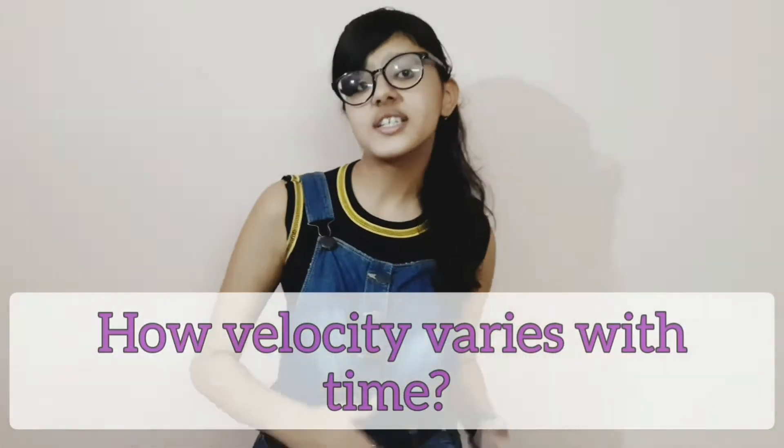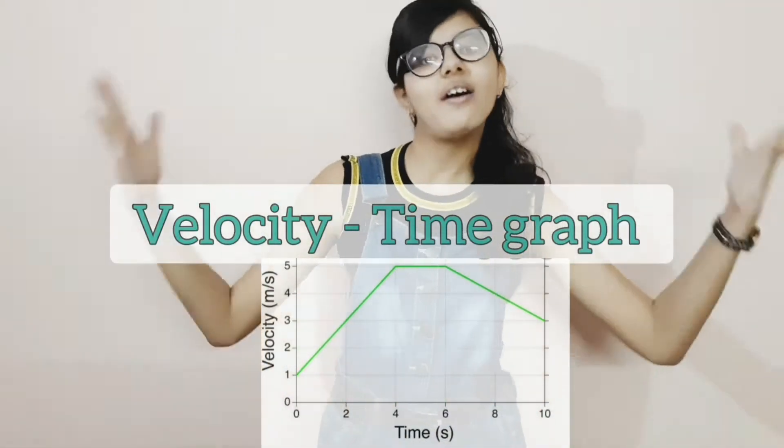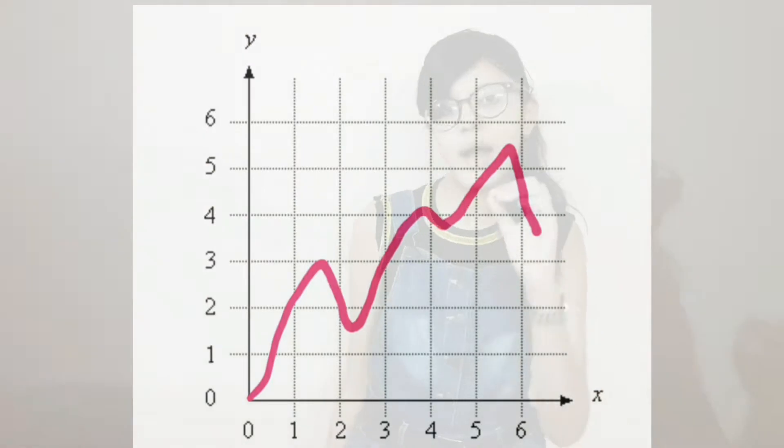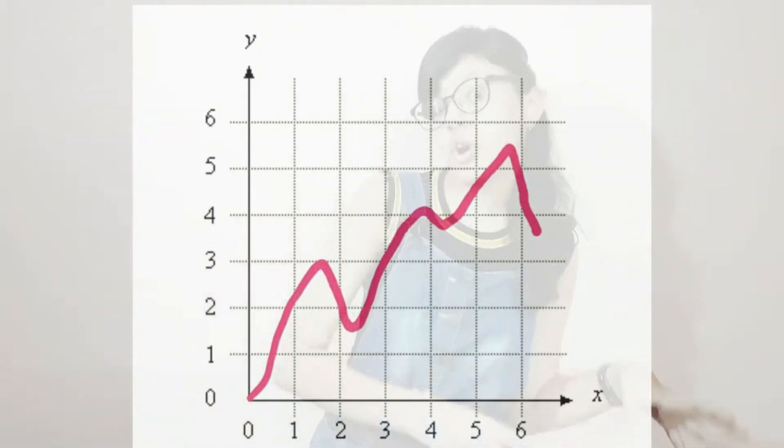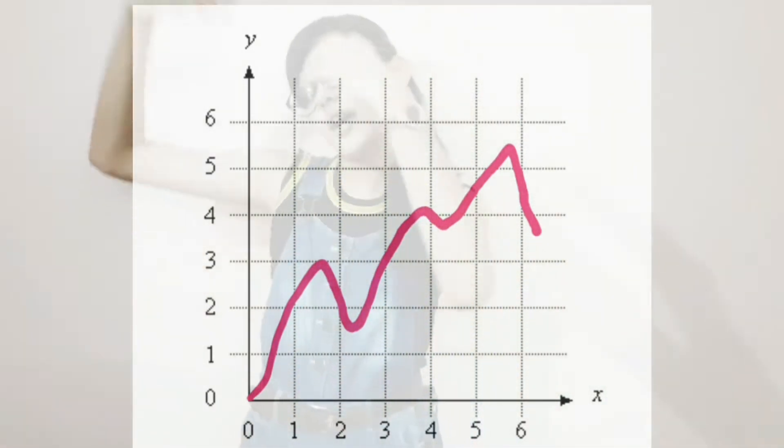In today's video we are going to learn how velocity varies with time — that is, the velocity-time graph. The reason we study this is that velocity can vary a lot: you can move faster and faster, slower and slower, or alternate between slower and faster.